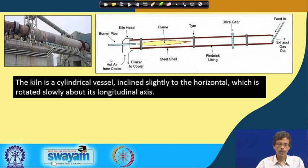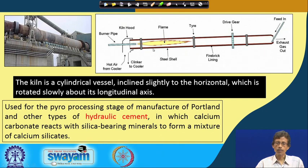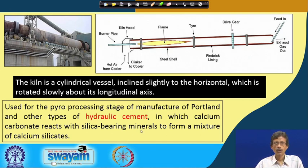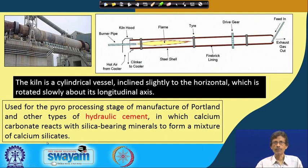The heated material is finally cooled using hot air from the cooler, and the clinker material is passed to the cooler. During this processing, the kiln is used for the pyro-processing stage — so named because of the high temperature reaction — for manufacturing Portland and other types of hydraulic cement. Calcium carbonate reacts with silica-bearing minerals; the typical lime, which is calcium carbonate, reacts with clay or kaolinite material.